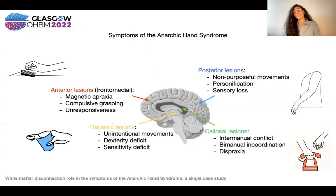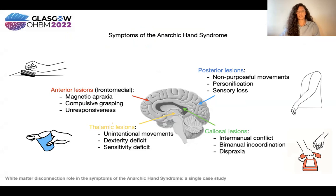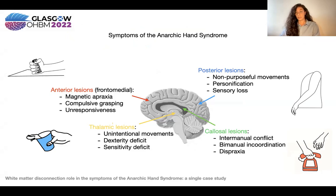Anarchic hand syndrome refers to involuntary movements of the contralesional limb, and different symptom patterns are associated with different lesion locations. For instance, frontal lesions are associated with compulsive grasping, while posterior lesions are associated with imitation and non-purposeful movements.